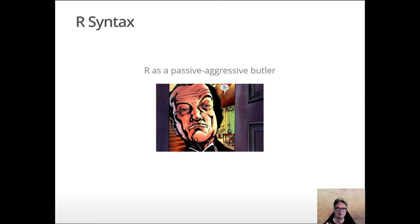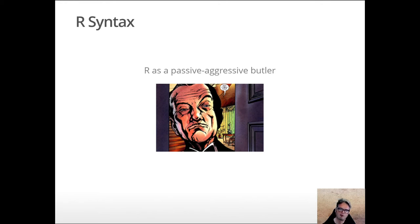What that means is that you can just type the code, submit it to the system, and behind the scenes it translates your R code — which is meant to be easy for humans to read. Many people would say it is very easy to read relative to other programming languages. Sometimes, especially when we're learning, we can submit syntax that is a little incorrect according to the rules of R syntax.